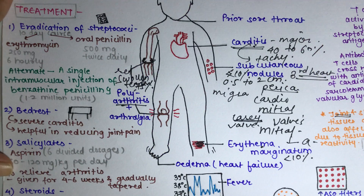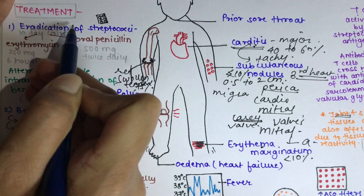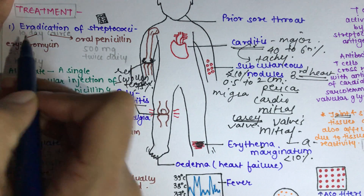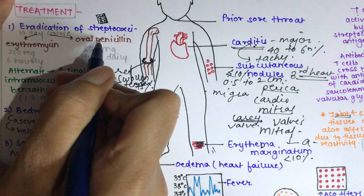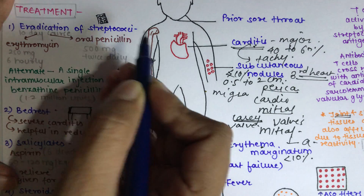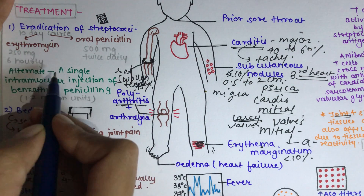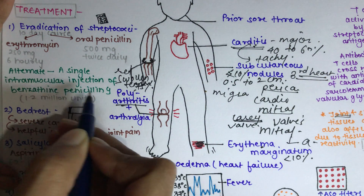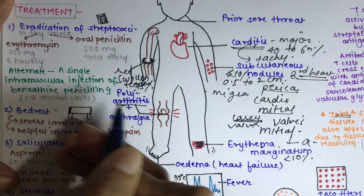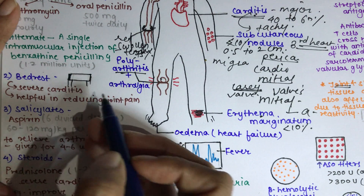Now for treatment. First is eradication of streptococci using antibiotics: erythromycin 250 mg 6-hourly, or oral penicillin 500 mg twice daily — both for a 10-day course. Alternatively, a single intramuscular injection of benzathine penicillin G 1.2 million units can be given.